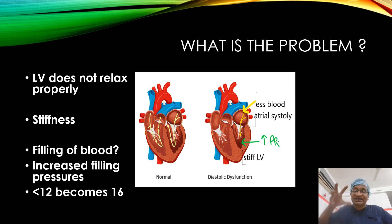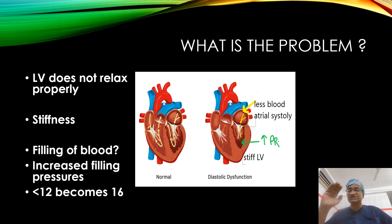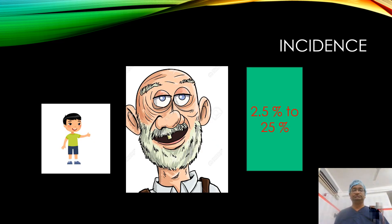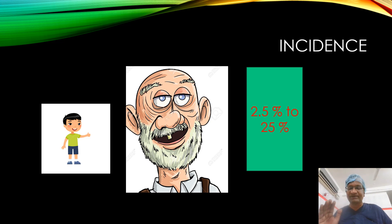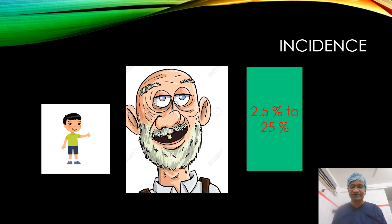The stiff LV also needs an atrial kick or atrial systole to fulfill its filling - this is the major problem. The incidence ranges from 2.5 to 25 percent. Many people aged 65 and above may have diastolic dysfunction.